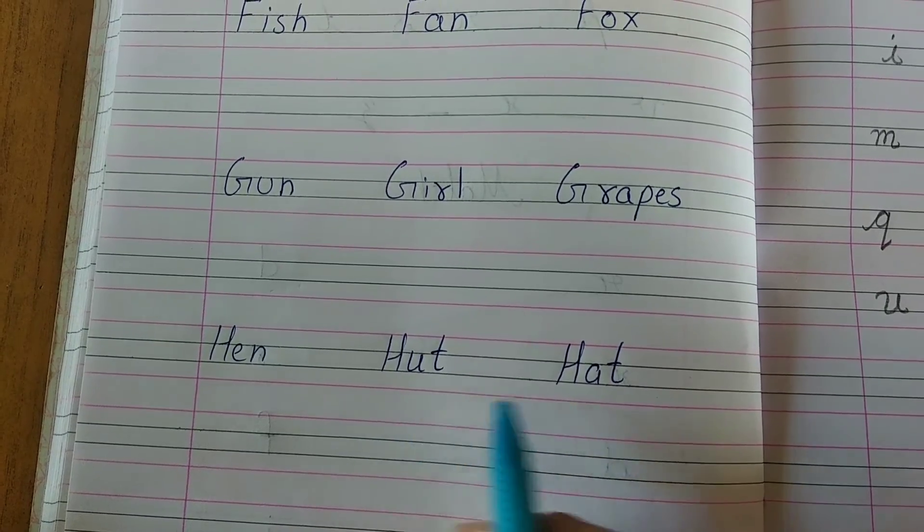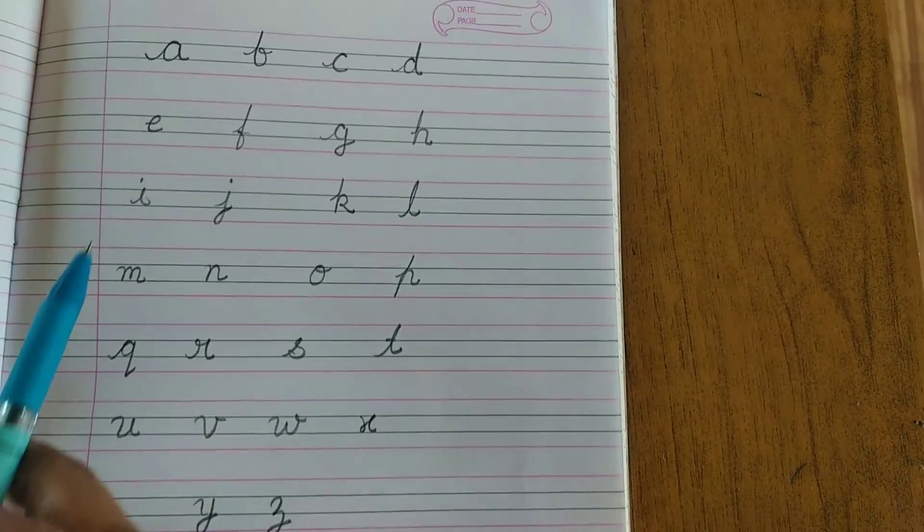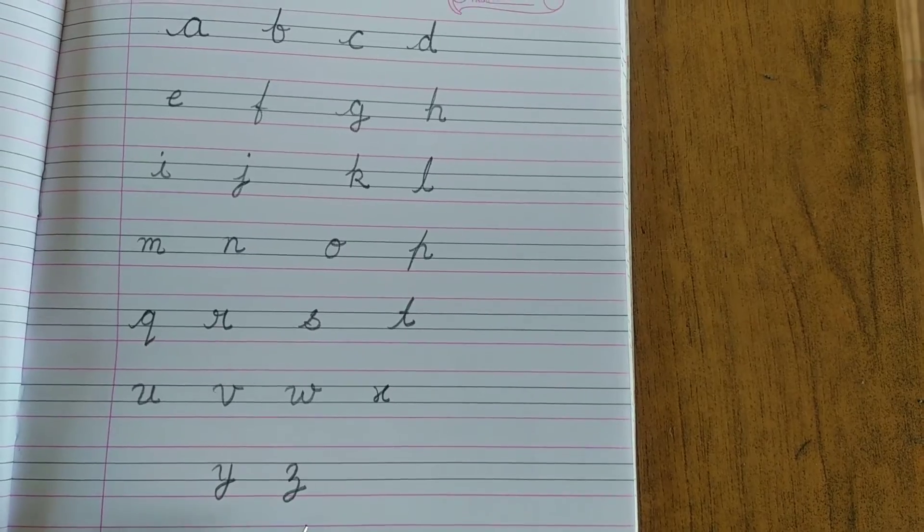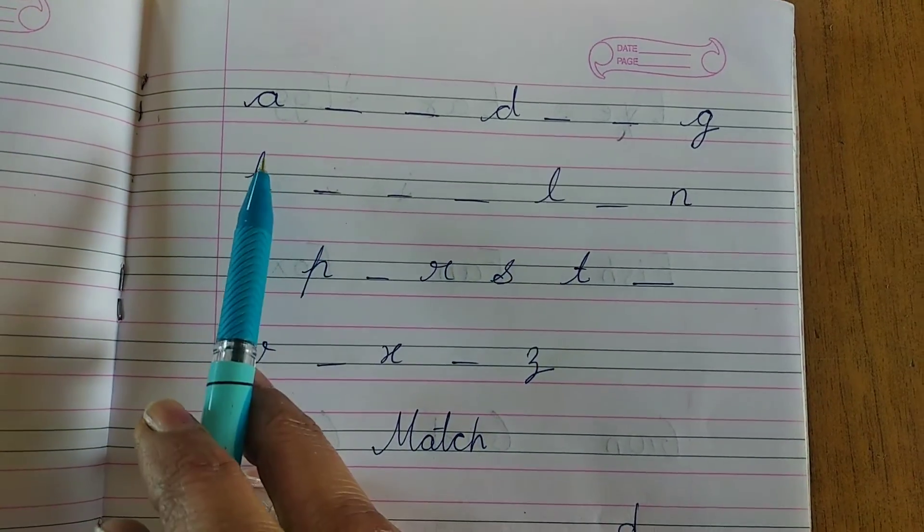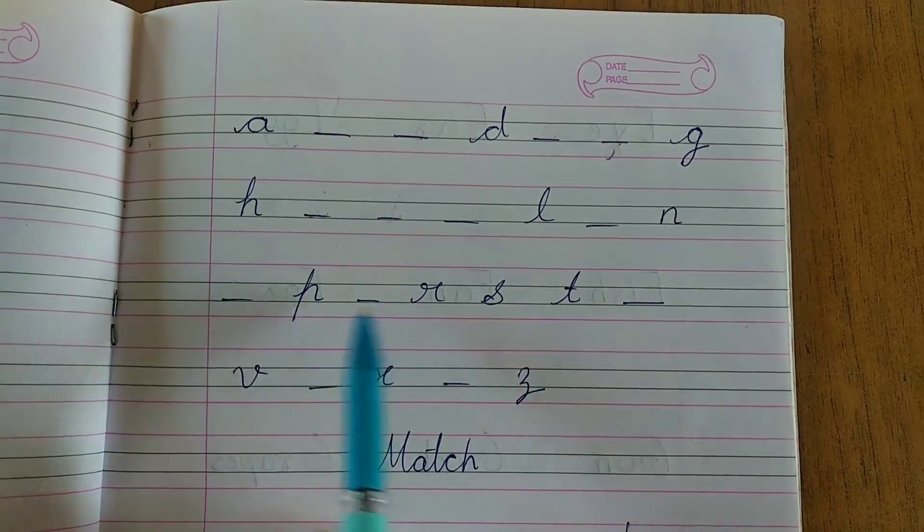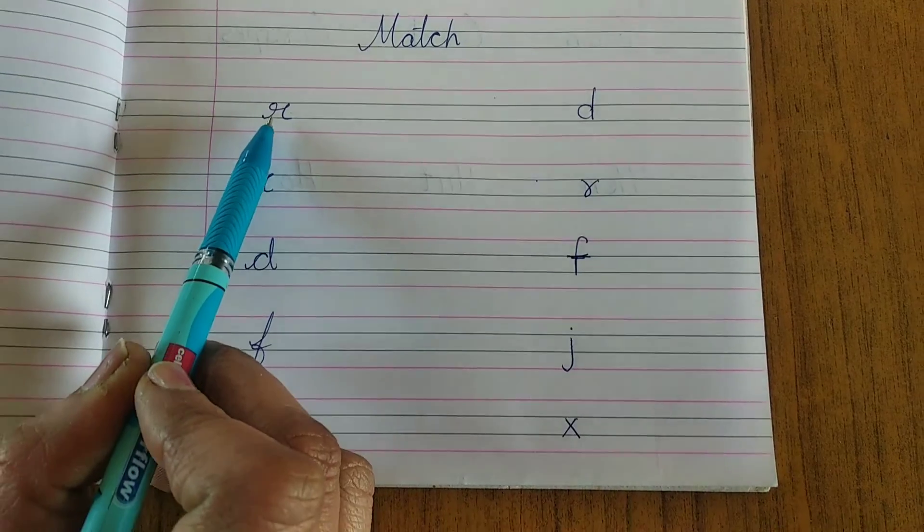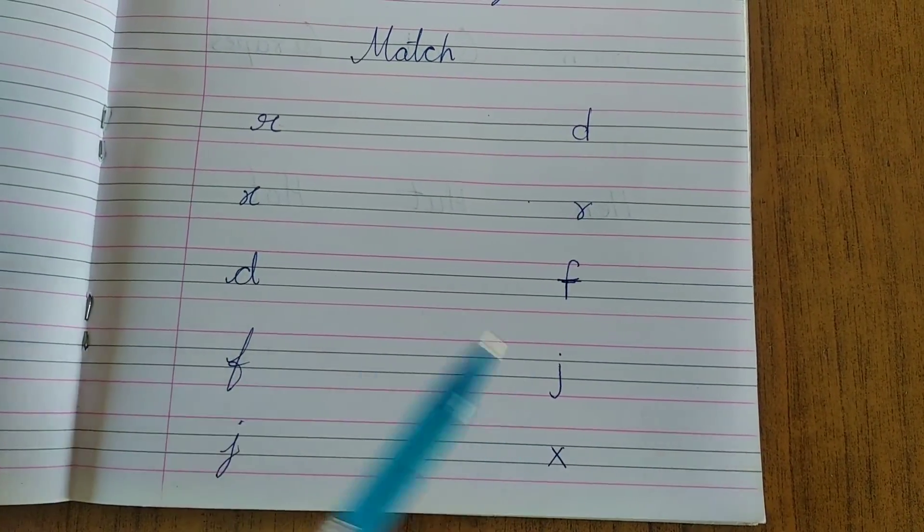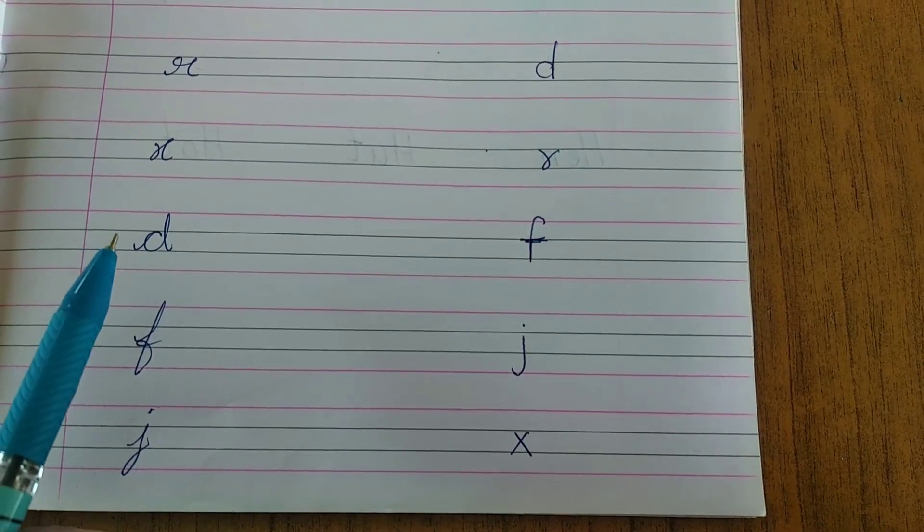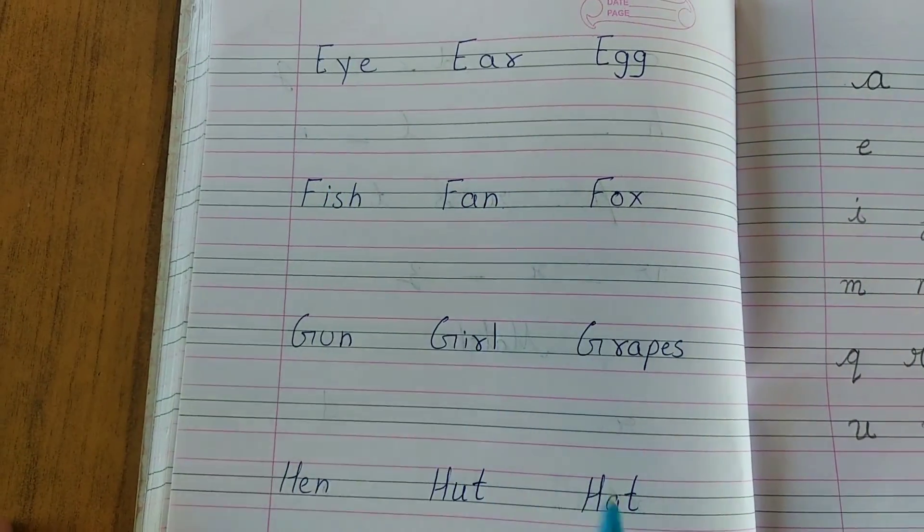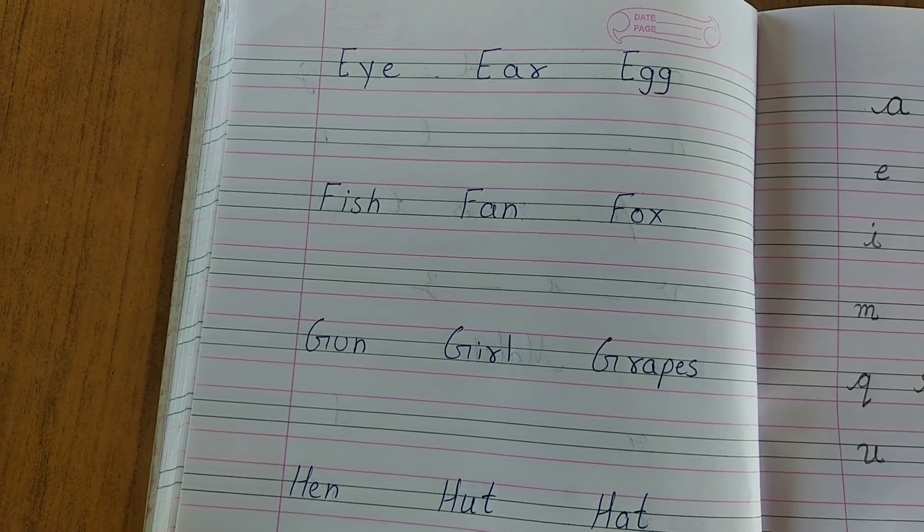You have to match small to small letters. When you do this, letters will be easy to identify and learn. Then E to H spellings, three spellings, you have to write and learn four times. Okay, this is your homework. Okay children, have a nice day. Do your work nicely.